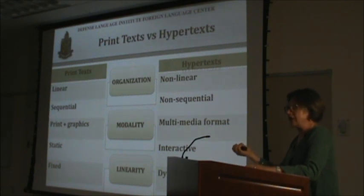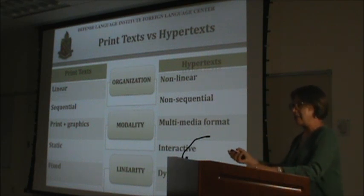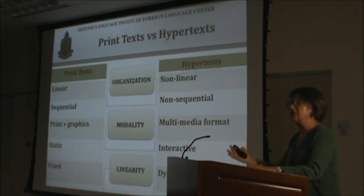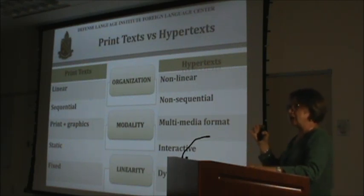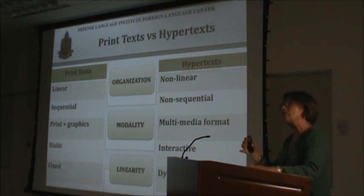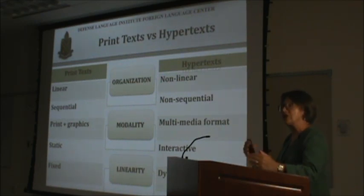Conventional texts present information shaped by the author, and readers have little choice but to follow the author's intended plot or expository structure. A further dimension of hypertext is that they are dynamic and can be updated regularly, so the reader may encounter a different text each time it is accessed — sometimes it's not even available anymore. Such texts have an unfixed dynamic existence, and often the length of the text available to the reader is unknown, as happens during DLPT tests.